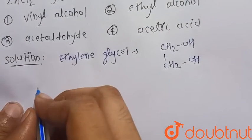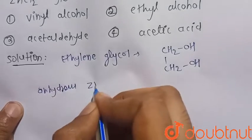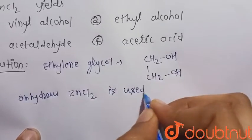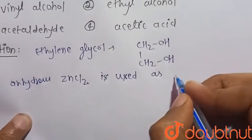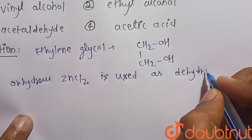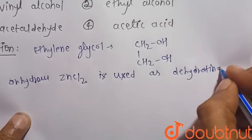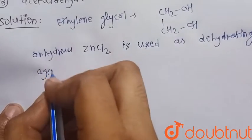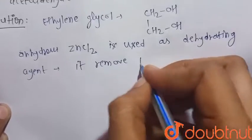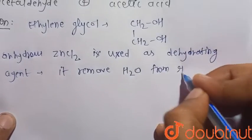So we know that anhydrous zinc chloride is used as a dehydrating agent, that is it removes water, that is H2O from reactant.